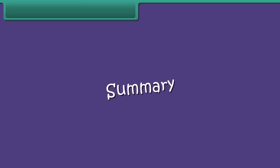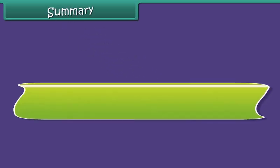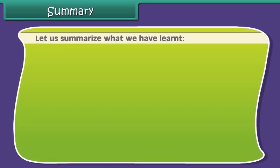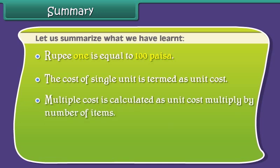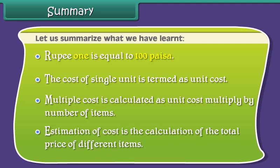Let us summarize what we have learned. Rupee 1 is equal to 100 paisa. The cost of a single unit is termed as unit cost. Multiple cost is calculated as unit cost multiplied by number of items. Estimation of cost is the calculation of the total price of different items.